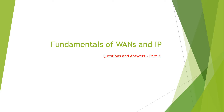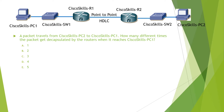Let's review the fundamentals of WANs and IP with questions and answers, part 2. Question: a packet travels from Cisco Skills PC2 to Cisco Skills PC1. How many different times does the packet get de-encapsulated by the router when it reaches Cisco Skills PC1?